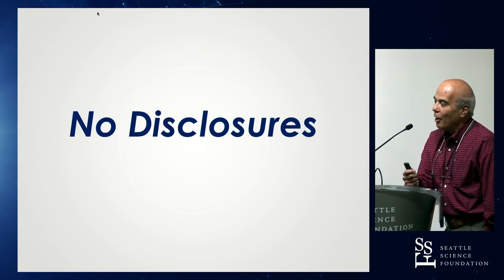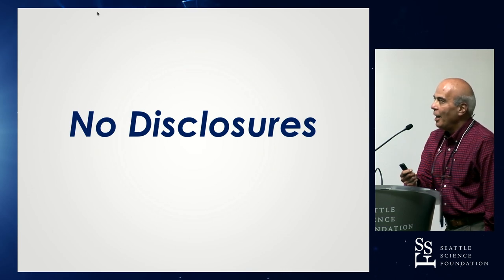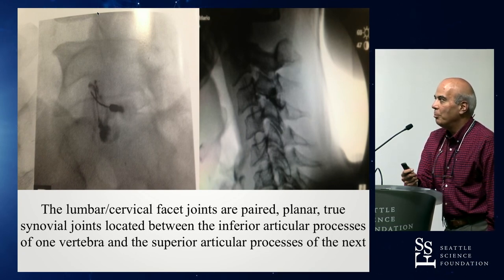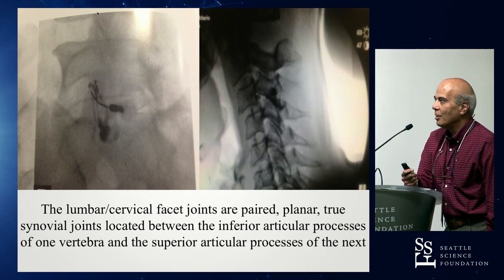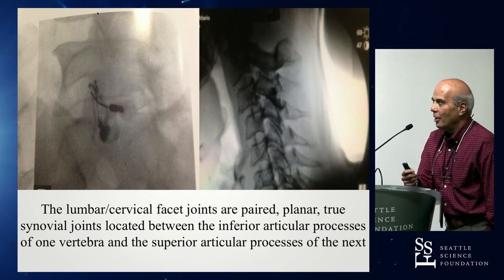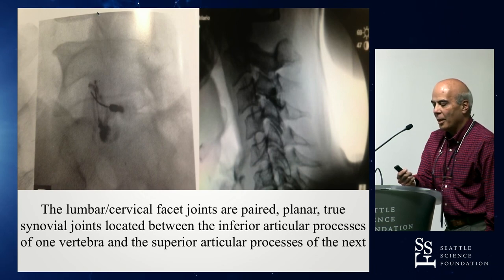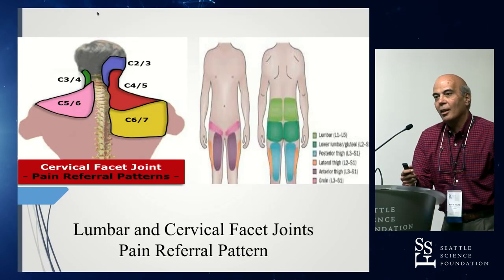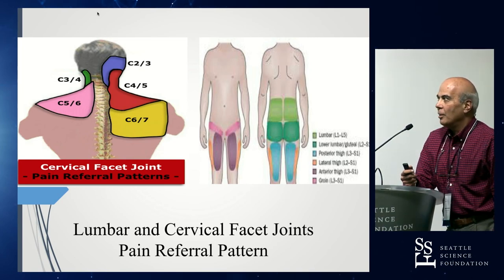I'm going to talk to you about radiofrequency ablation procedure for lumbar and cervical spine facet joint pain. The facet joints are true synovial planar paired joints that are usually located between the inferior articular process of one vertebra and the superior articular process of the next vertebra. These cartoons show the referral pain patterns for cervically mediated facet joint pain and lumbar mediated facet joint pain.